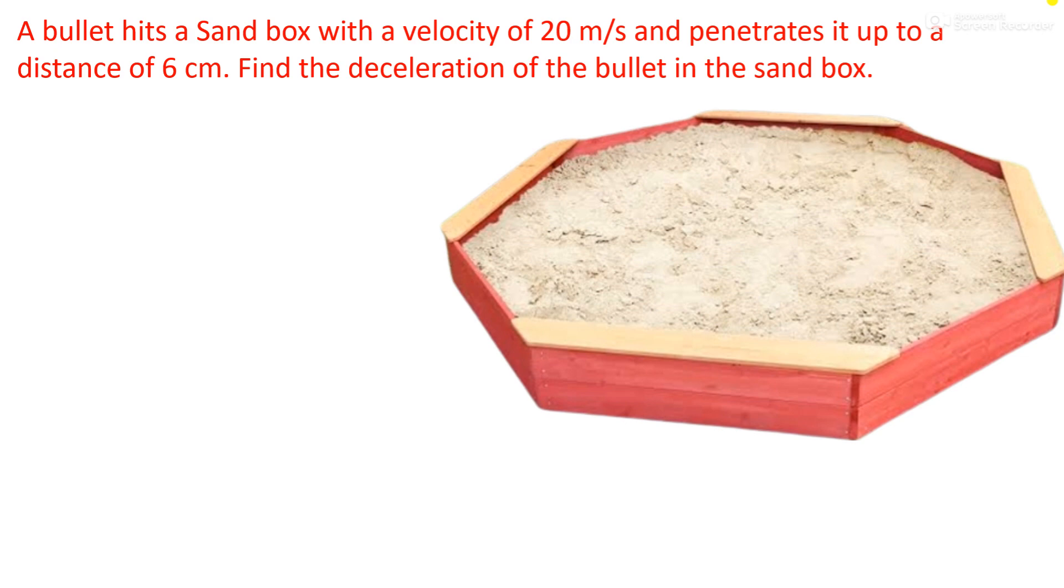This sandbox is hit by a bullet. The velocity with which it hits the sandbox is its initial velocity, denoted by u, which is 20 meter per second. When it hits the sandbox, after traveling some distance it comes to rest, so its final velocity, denoted by v, becomes zero meter per second because it comes to rest.